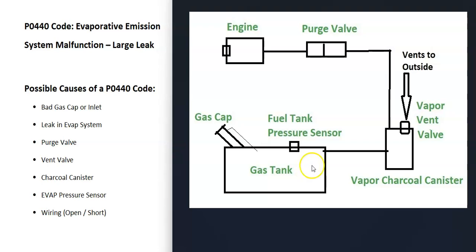The basics of what's happening is that gas vapors leave the gas tank, go through a hose, and go over to what's called a vapor charcoal canister, which is basically storage for the gas vapors. Either on or near the charcoal canister is what's called a vent valve. The computer can use this to test the system, opening and closing it at certain times to check for leaks. A hose then goes from the charcoal canister up to the engine to what's called a purge valve, which opens when the engine's running so gas vapors get burnt off, and closes when the engine's not running.